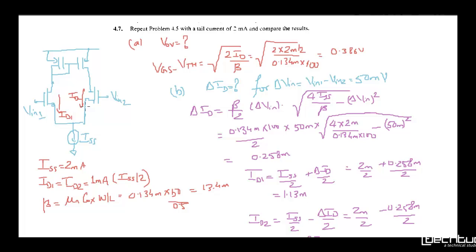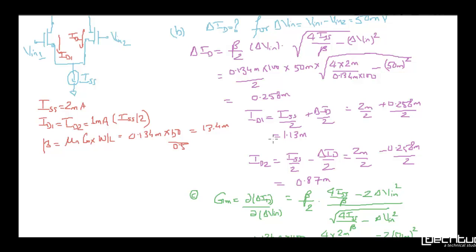The second problem: if VIN1 minus VIN2 is 50mV, what is the change in current at both ends? We have the formula derived in problem session 5. Delta ID is beta by 2, delta VIN under root of 4 ISS by beta minus delta VIN whole square. We substitute all the values and get 0.258mA. ID1 will be ISS by 2 plus delta ID by 2, and ID2 will be ISS by 2 minus delta ID by 2, giving 1.53mA and 0.87mA.